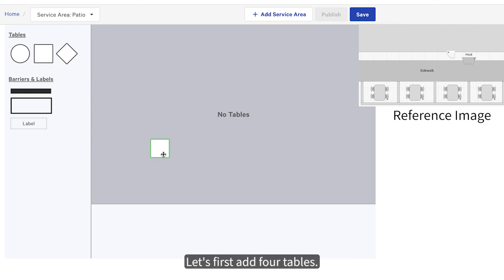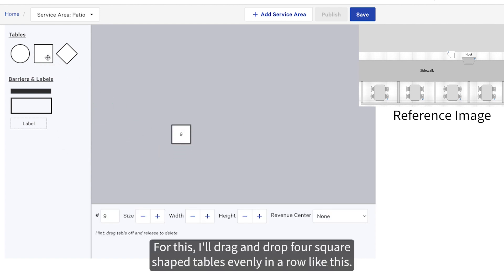Let's first add four tables. For this, I'll drag and drop four square shaped tables evenly in a row like this.